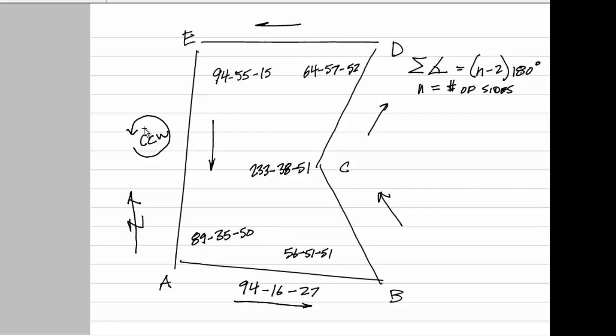So in this case, we have five sides. So if I plug n equals five in here, for n equals five, then the sum of the interior angles would be n minus two, that's three, times 180. That is going to give us 540 degrees. So we need to find out how close to that we actually got.